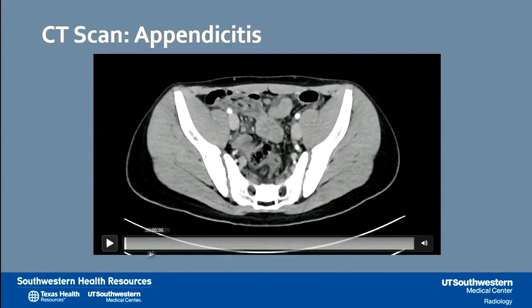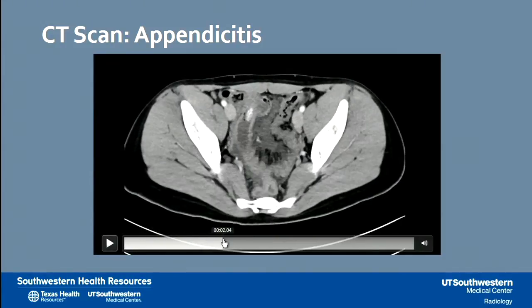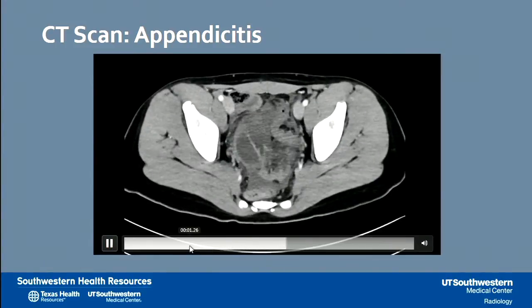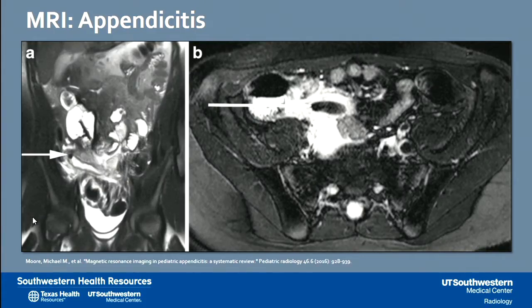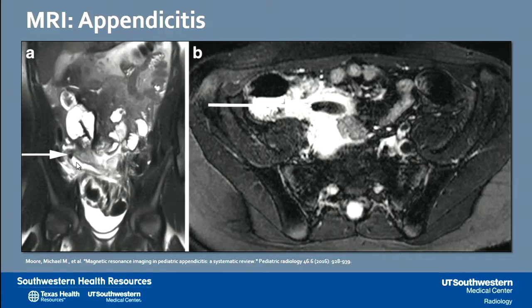CT scan has historically been the imaging gold standard for diagnosing appendicitis — it clearly shows the appendicolith within the appendiceal lumen, as well as the inflammation and fluid around the appendix. MRI is an imaging modality used more recently, and it also shows features of appendicitis very exquisitely. This includes the appendicolith within a tubular fluid-filled structure and free fluid adjacent to it, also clearly diagnostic on coronal views.